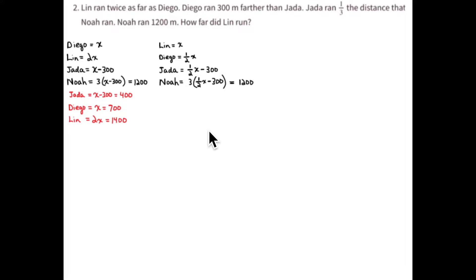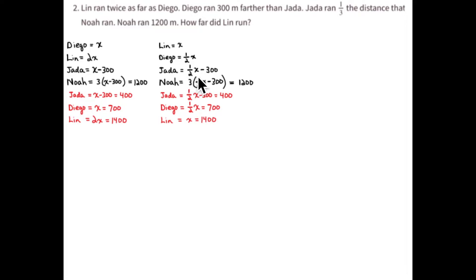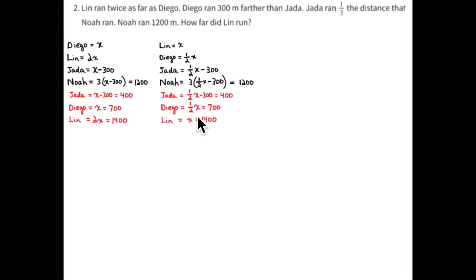Same idea over here with x equal to Lin. Jada is one-third Noah's run, so Jada is one-half x minus 300 — that equals 400. Diego is 300 meters more than Jada, so add 300 to get Diego's expression: one-half x equals 700 meters. And Lin ran twice as far, so two times one-half is one, and x equals two times 700, or 1,400 meters.